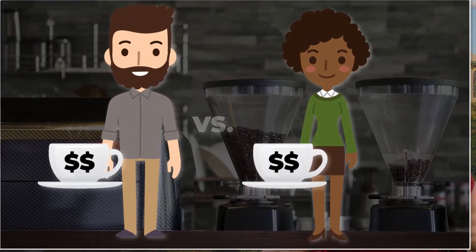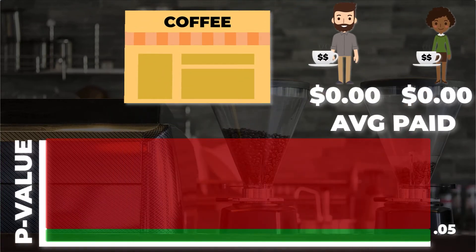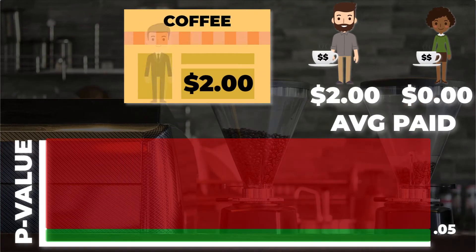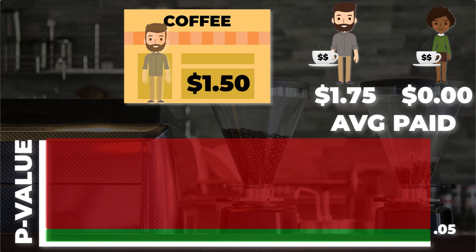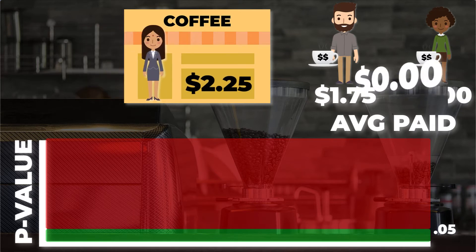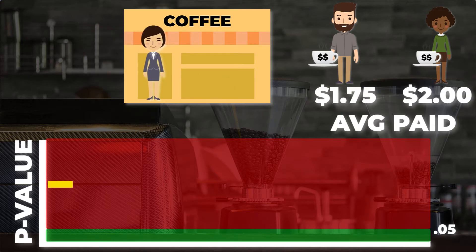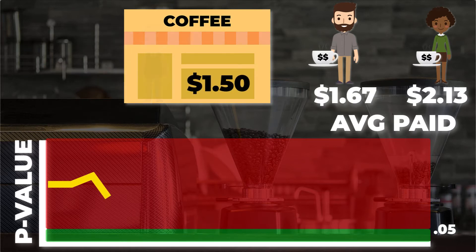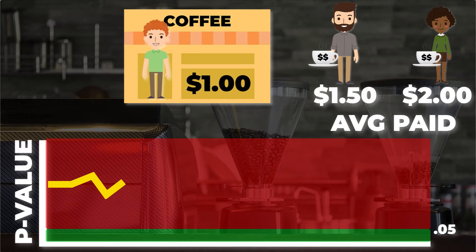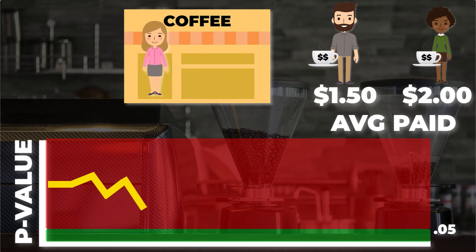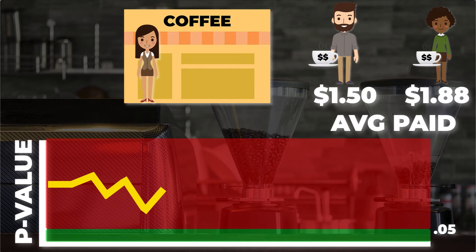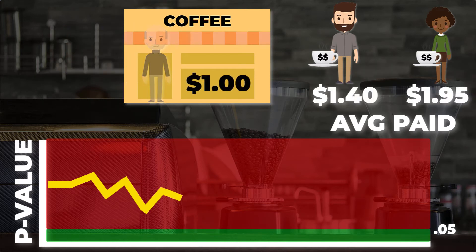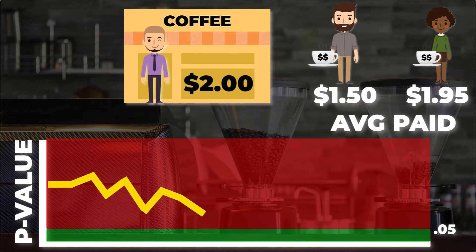So let's run our little study and see how it unfolds. As people come into the coffee shop, I update the average price paid by them and everyone who came before them, and I'm going to plot the p-value I get when I make the comparison between men and women every time someone new comes in. As you can see, the p-value fluctuates a lot, because sometimes you get a person who pays a lot for coffee and sometimes you don't — and when that happens in our series of customers is totally random.